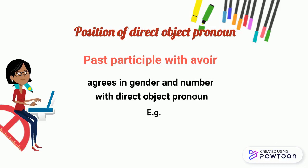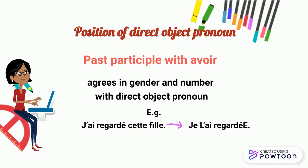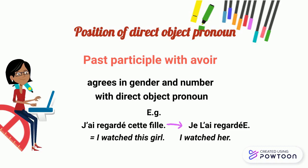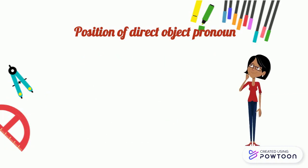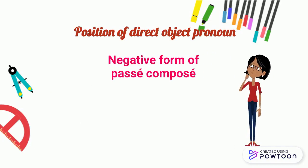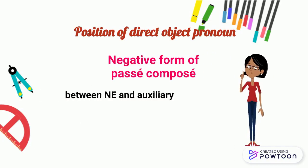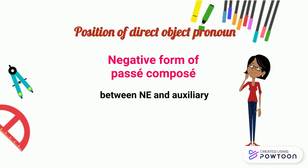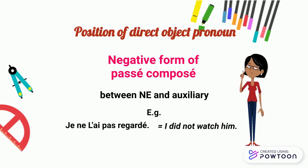For instance, j'ai regardé cette fille — je l'ai regardé. I watched this girl — I watched her. At the negative form of the passé composé, the pronoun is placed between ne and the auxiliary. For example, je ne l'ai pas regardé — I did not watch him.